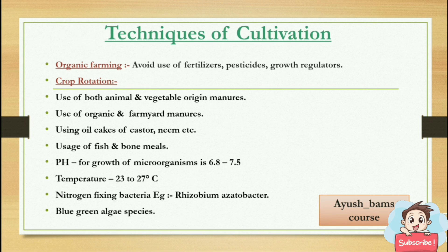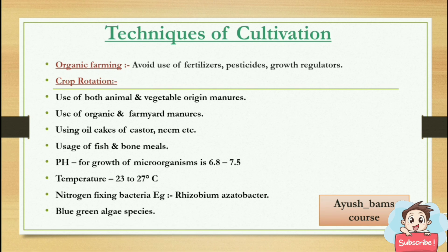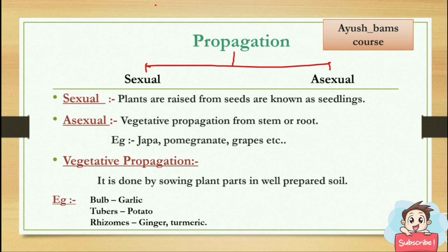Techniques of cultivation — organic farming: in organic farming, we avoid usage of fertilizers, pesticides, and growth regulators; we don't use any artificial thing. Crop rotation uses both animal and vegetable origin manures, organic farm yard manures, oil cakes of castor, neem, etc., and fish and bone meals. The pH for growth of microorganisms is 6.8 to 7.5, and temperature is 23 to 27 degrees. Nitrogen-fixing bacteria include, for example, Rhizobium, Azotobacter, and blue-green algae.